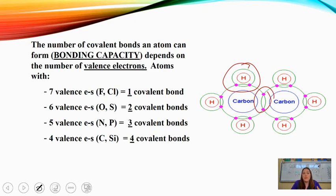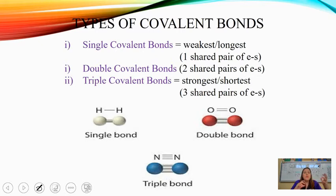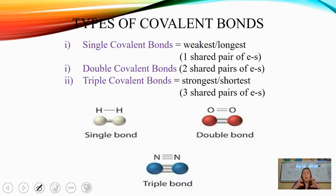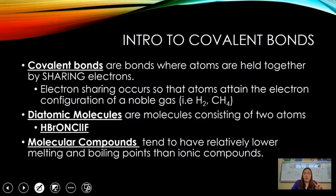There are different types of bonds in covalent compounds. A single bond is the weakest and longest — it's a shared pair of electrons (two electrons). Double bonds share two pairs of electrons, a total of four electrons. Triple covalent bonds are very strong and very short, sharing a total of six electrons — three pairs.